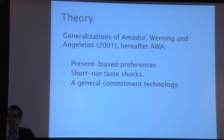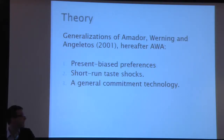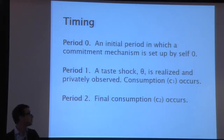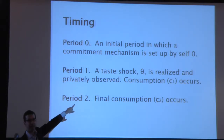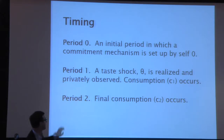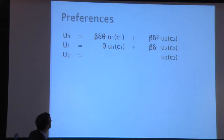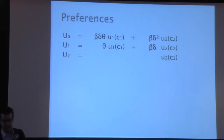Let's turn to theory. We're going to generalize Amador, Wernig, and Angelatos' 2006 Econometrica paper — AWA. That paper has three critical ingredients: present bias preferences, short-run taste shocks, and a general commitment technology. The timing: an initial period where a commitment mechanism is set up by self-zero; in period 1, a taste shock theta is realized and privately observed, and consumption C1 occurs; in period 2, final consumption occurs. The only change from the standard framework is that now we have a taste shock occurring in period 1.